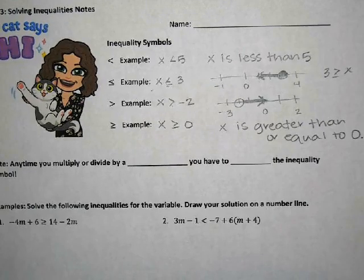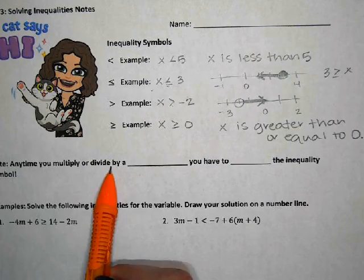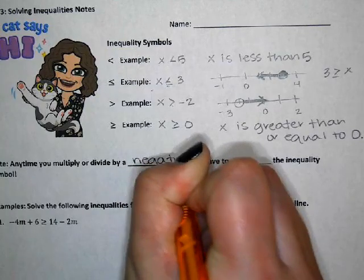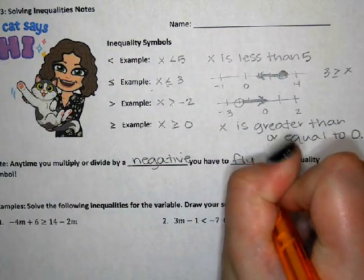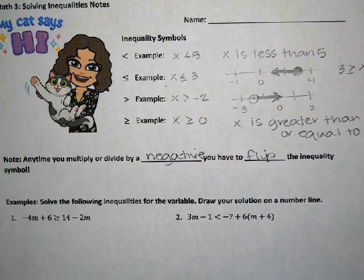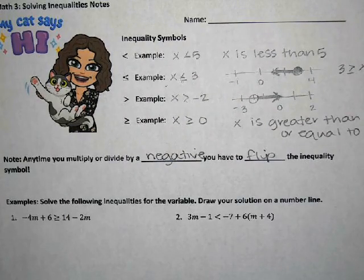Solving inequalities is very similar to solving equations — the steps are very similar to what we did yesterday. The big difference is that if you multiply or divide by a negative, you have to flip the inequality symbol. It's not if you add or subtract a negative — only if you multiply or divide. That's the one little thing that's different; the rest is the same.